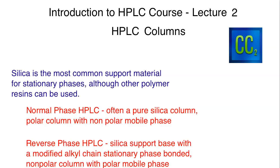In normal phase HPLC, you're usually going to have a pure silica column. That's going to make for a polar column with a non-polar mobile phase. Silica itself is basically a bunch of alcohol groups that are bound up to a silicon backbone. This is very polar when you're dealing with all of these alcohol groups. We tend to use a non-polar mobile phase, because if you use a polar mobile phase it's really just going to wash everything directly off of the column and you're not going to get any type of retention time — that's useless in terms of separation.